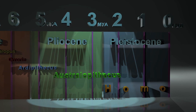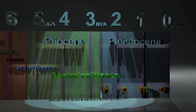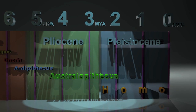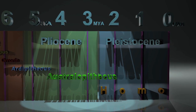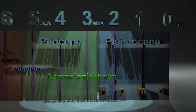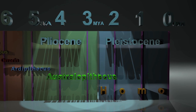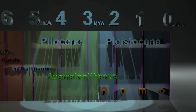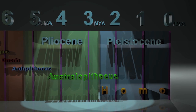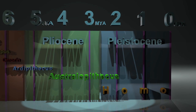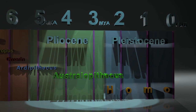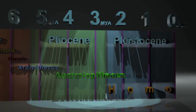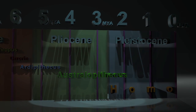We begin to encounter Australopithecus at around 4.2 million years in the past. The Australopithecines are a very important relation on the family tree Homo. Let's begin our look at the genus Australopithecus on an October Saturday in 1924.